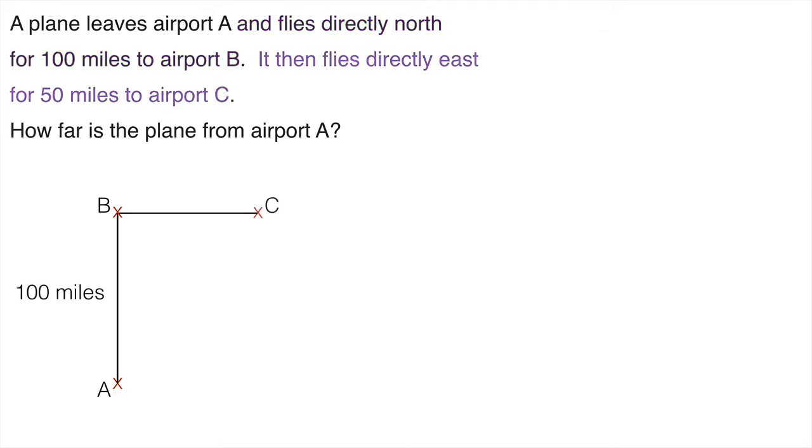It then flies directly east for 50 miles to Airport C. Now by drawing that we can see we've actually created a right angle here, north and then east. And the question asks how far is the plane from Airport A? Well that's the distance AC or CA.